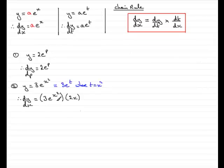So I've used the chain rule here, dy by dt, times dt by dx. This gives me, overall, dy by dx. Just need to clean this up. 3 times the 2 is 6. Put that x at the beginning, 6x, and then e to the x squared. All right?